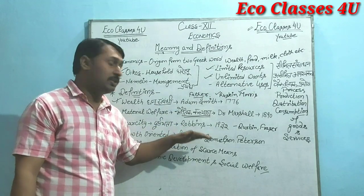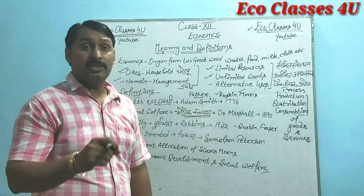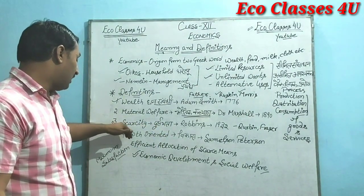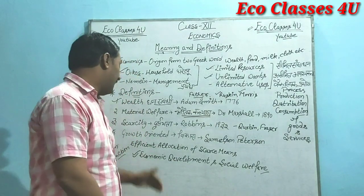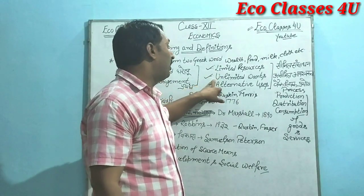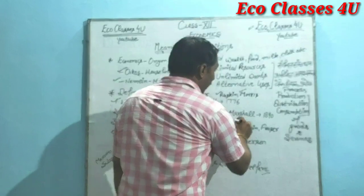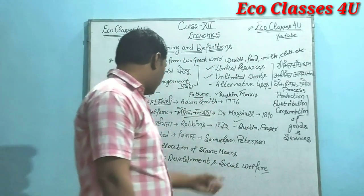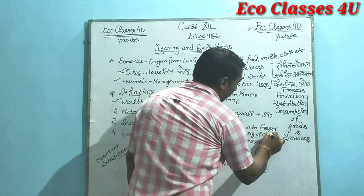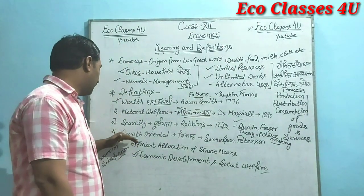Third definition is the Scarcity Definition — durlabhta-sambandhi paribhasha — and this definition is given by Lord Robbins in 1932. Unki book ka naam hai 'An Essay on the Nature and Significance of Economic Science'. Yeh definition human behavior ko study karti hai as a relation between unlimited wants and scarce means. Lekin isko bhi criticize kiya gaya — Durbin ne isko criticize kiya aur unhone kaha ki yeh definition sirf a theory of choice making hai.